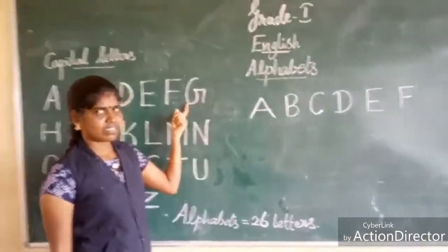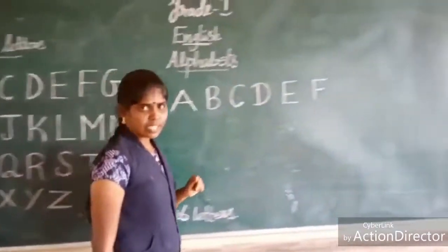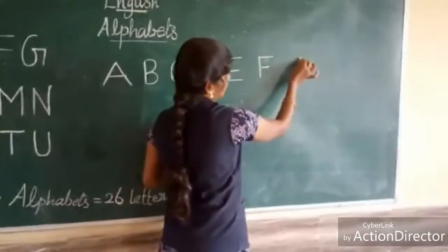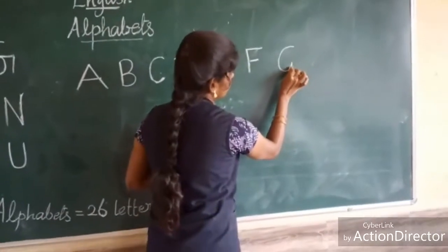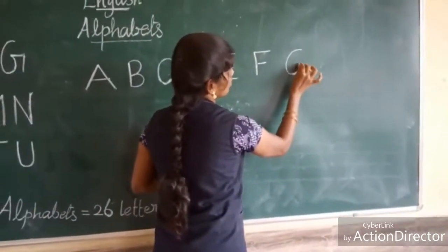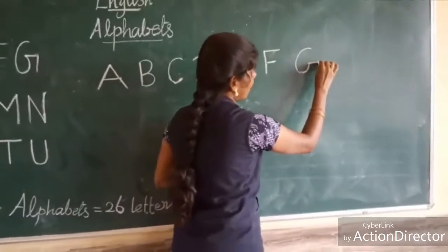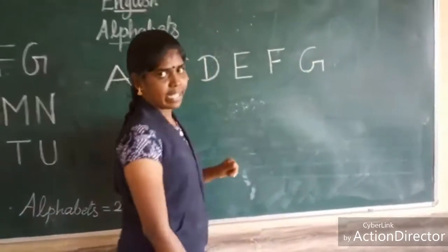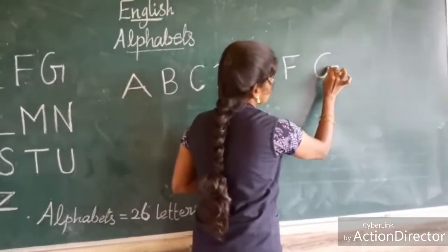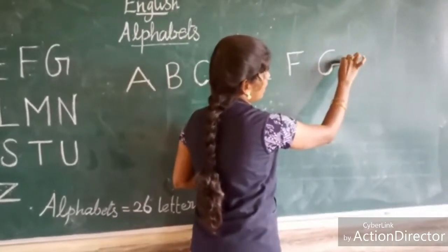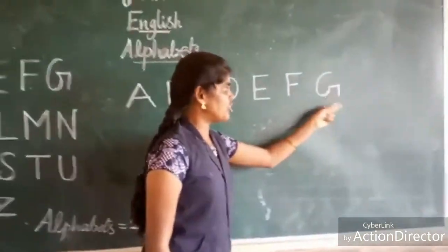Next, what letter is this? G. How to write G? One big curve, small sleeping line to the right, small standing line. This is G.